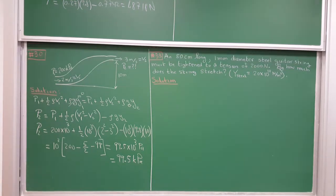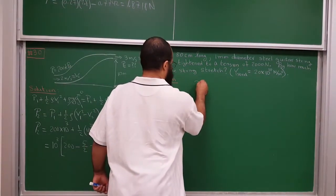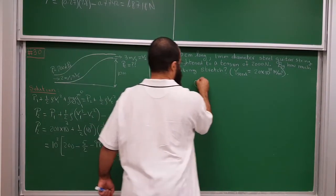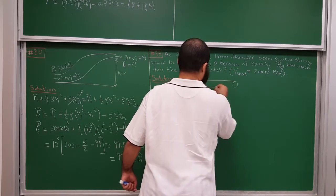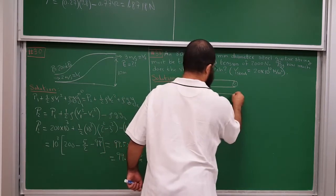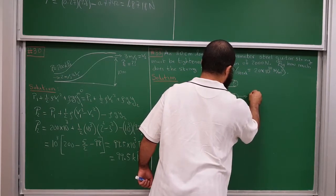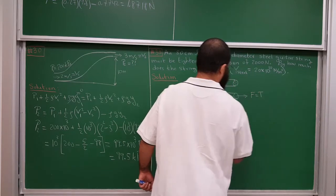The next problem involves an 80-centimeter guitar string made of steel, 1 millimeter in diameter, that must be tightened to a tension of 2000 newtons. The question is: by how much does the string stretch? We draw the string with its cross-sectional area A and original length L, and apply a tension force that extends it by an amount Δl.